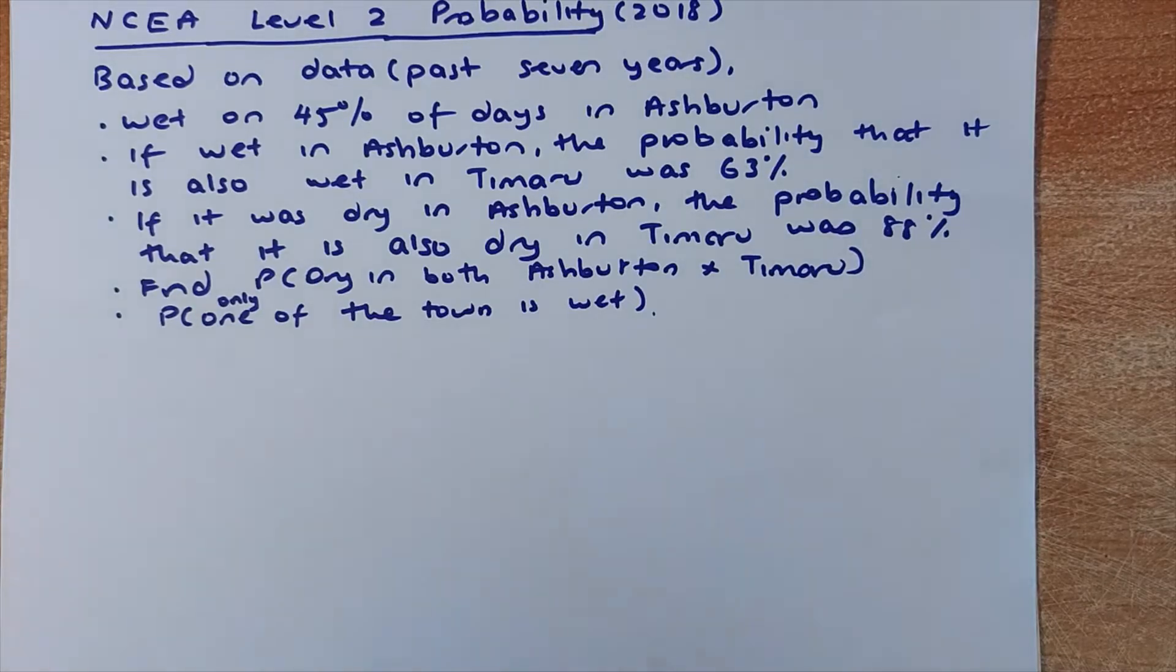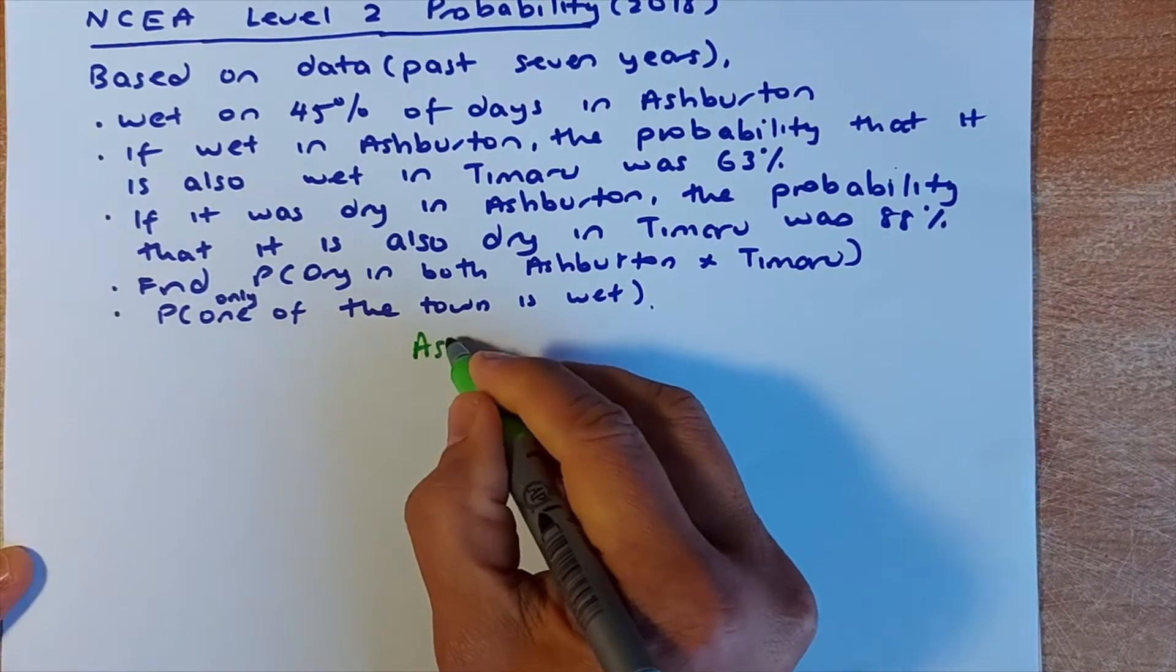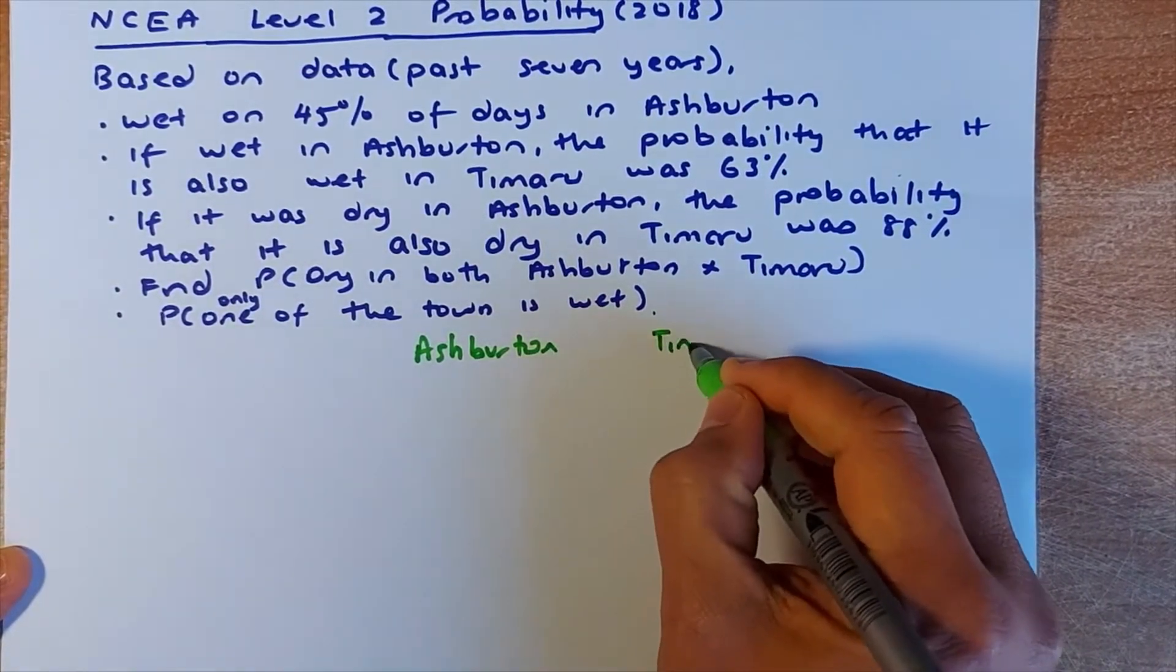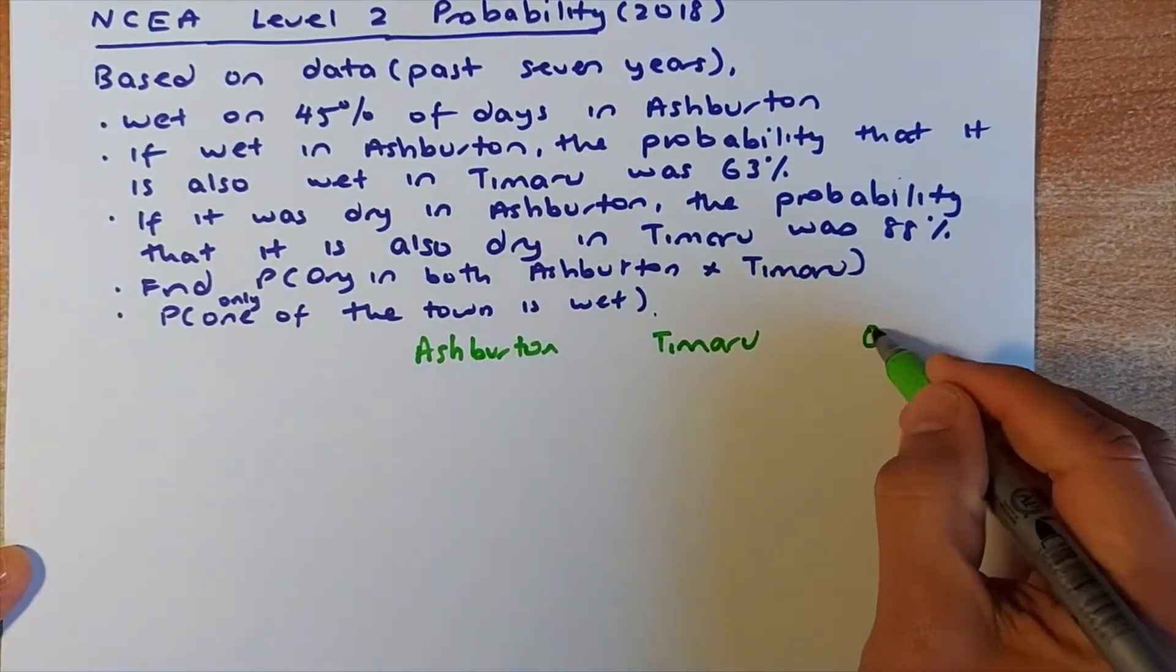So before we even calculate the probability, we are going to draw the tree diagram. So again, we are going to put event 1. So event 1 is Ashburton. And event 2 is Timaru. And of course, the last one is the outcome.